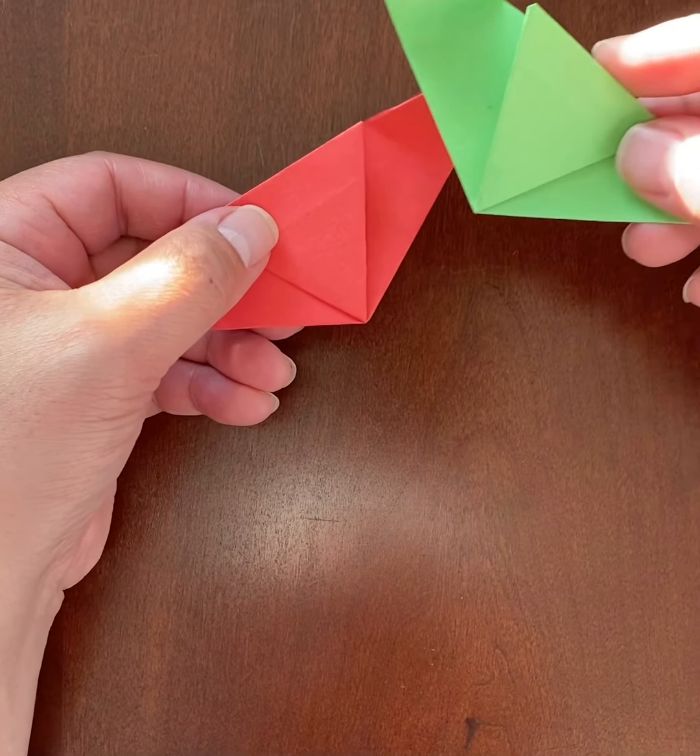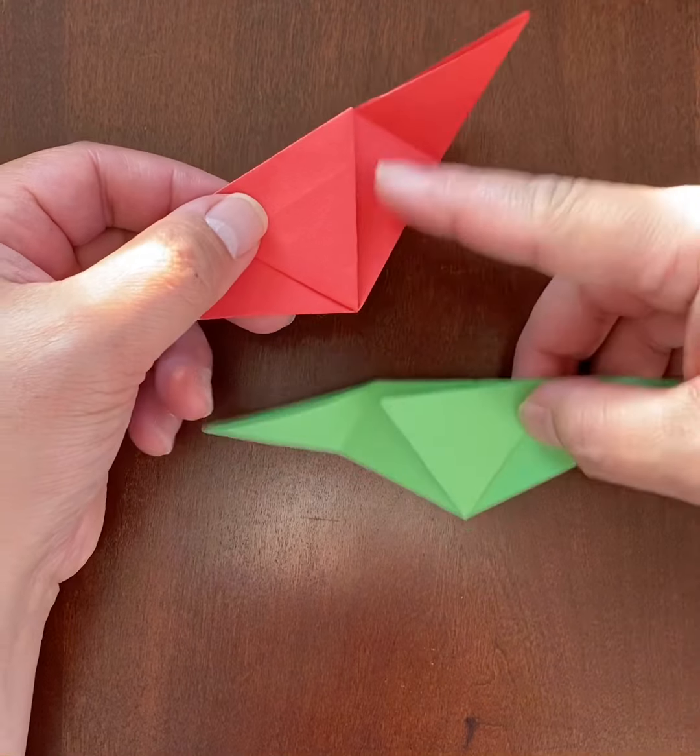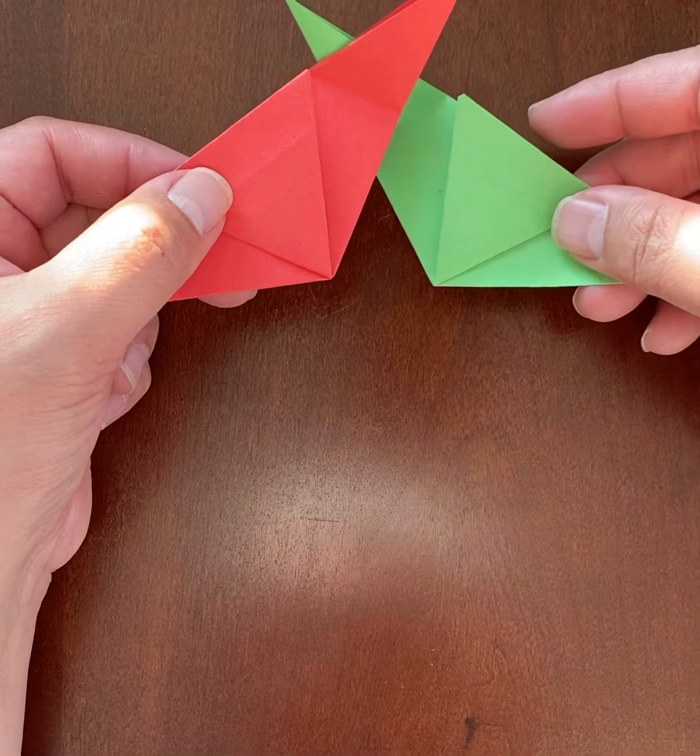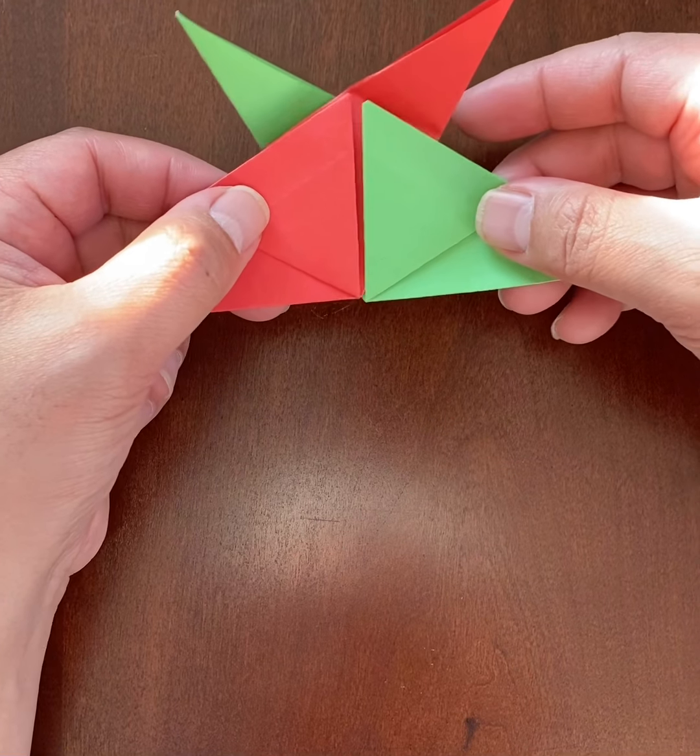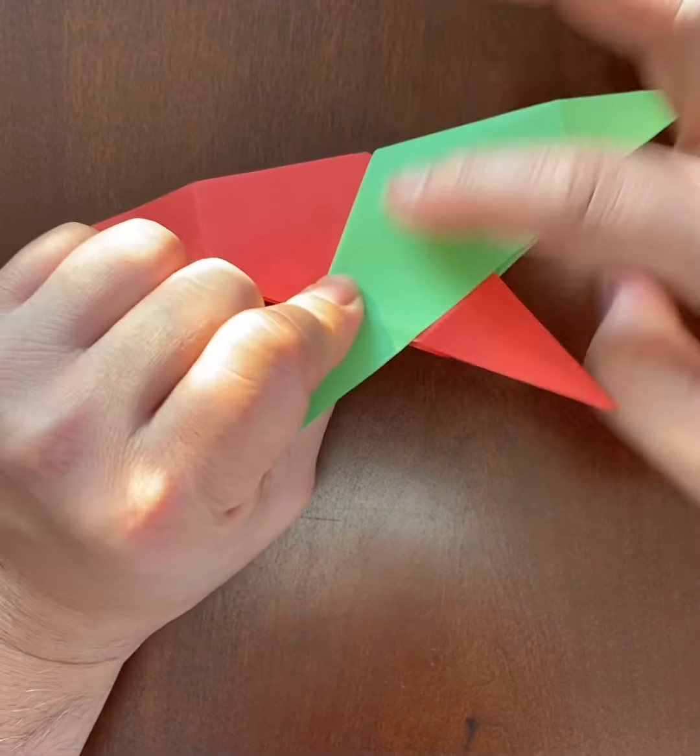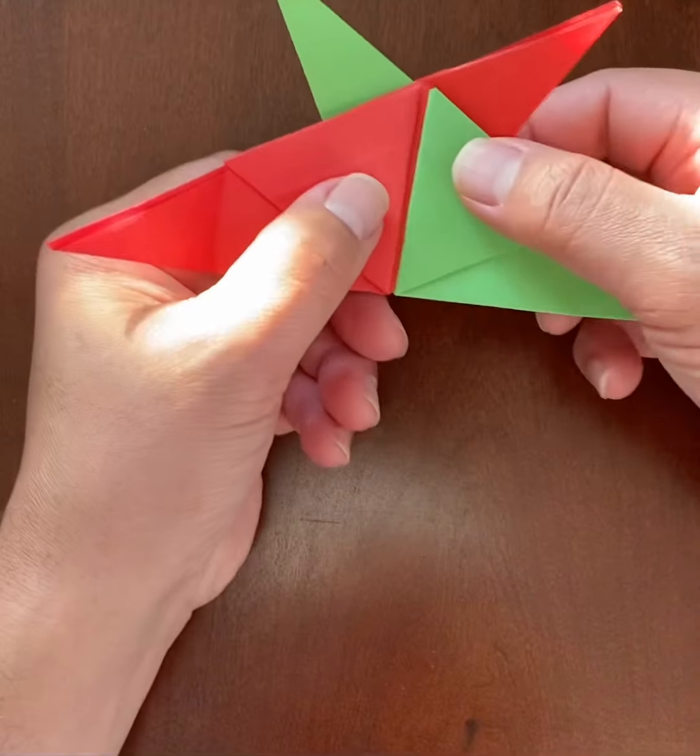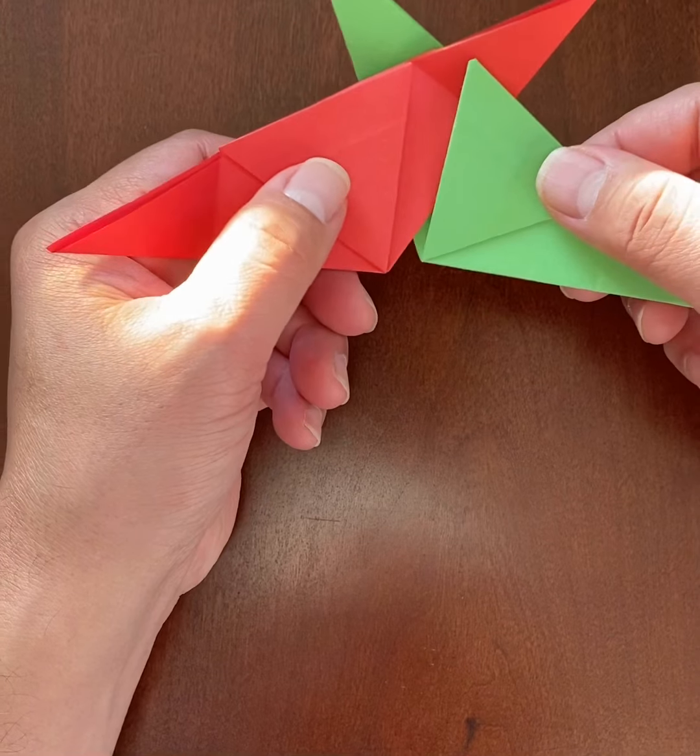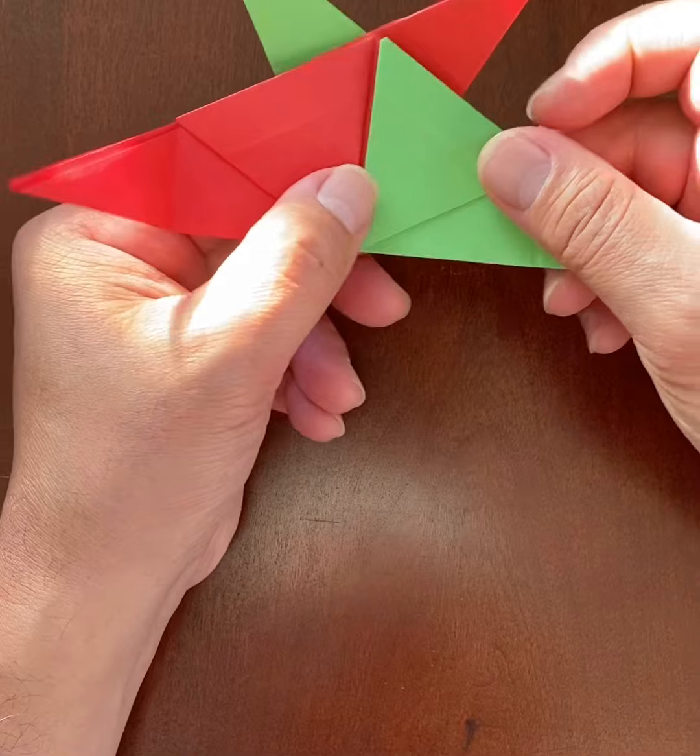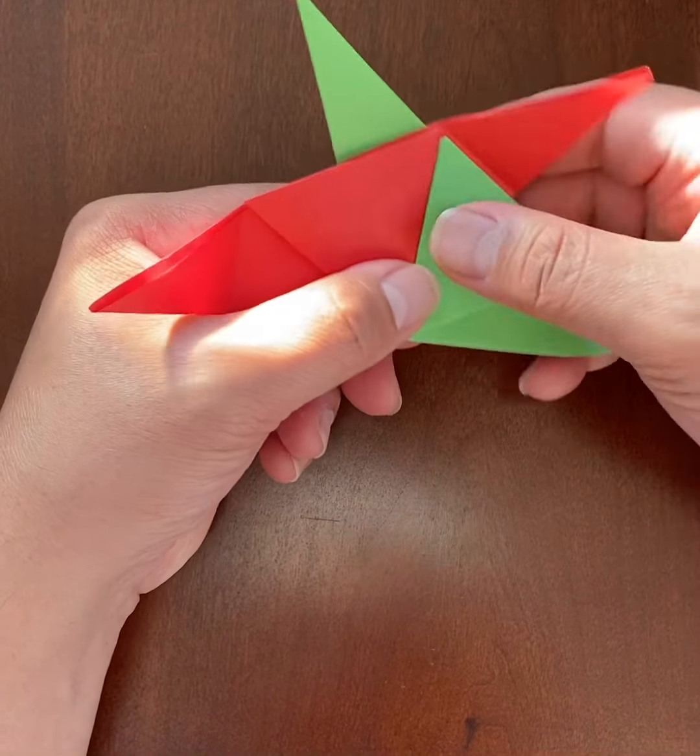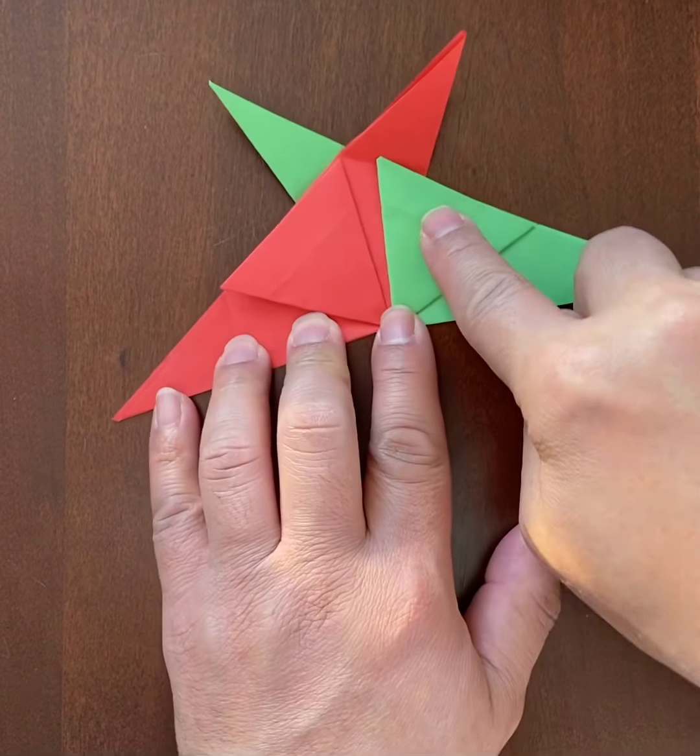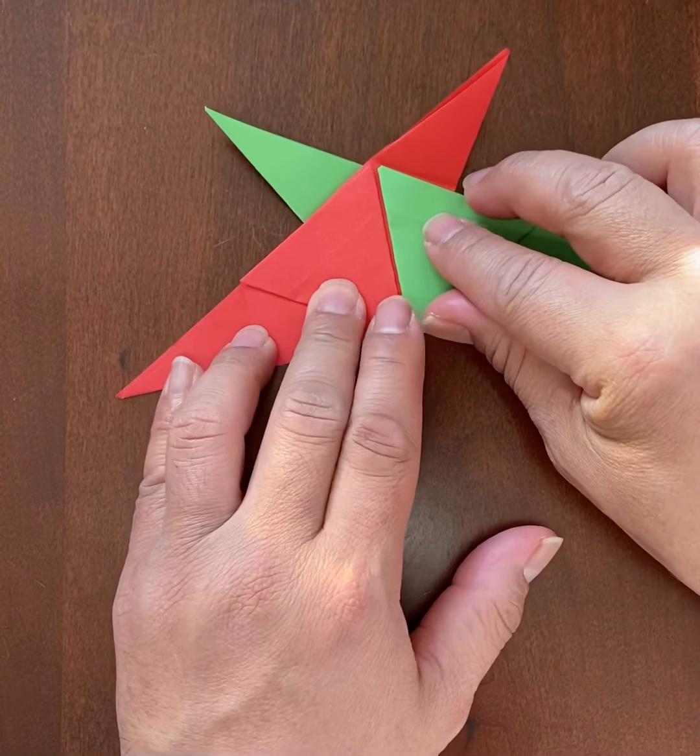Or I can put the red module's flap underneath the green triangle, and then I would have the green on the top on the other side. But basically, when I put either of those long flaps underneath the respective triangle, then the two triangular sections from each module are right next to each other like that.